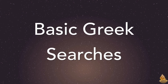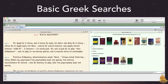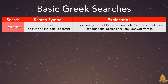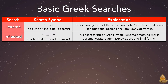Accordance offers four basic types of Greek searches. We can see them all by right-clicking any word in a tagged Greek text and choosing Search For. Here they are in order: Lexeme, Inflected, Root, and Tag. The Lexeme search has no particular symbol since it's the default search for Accordance. It looks for the dictionary form of the verb, noun, or other kind of word, and it searches for all forms, all conjugations, all declensions that are derived from it.